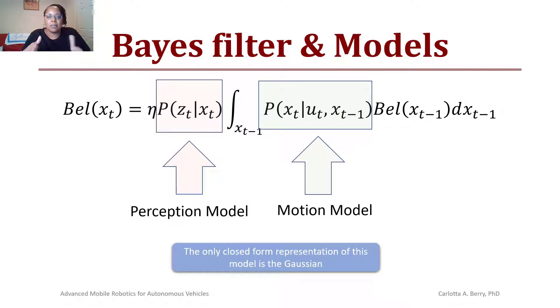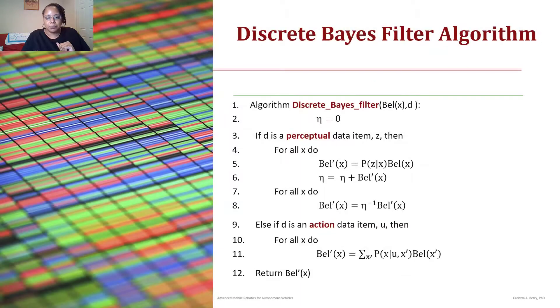So the algorithm to do this is given by the following. Assume that you have a function discrete_bayes_filter that has an input that says what is the probability of a posterior belief that I am in this state given this data point.